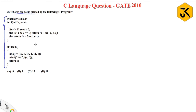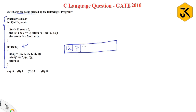Every program starts executing from the main method. Immediately, they have declared one array 'a' with elements 12, 7, 13, 4, 11, 6. The memory location of array 'a' starts at address 100, and the next elements are at 102, 104, 106, 108, 110. We increment by 2 digits because integer is an integer data type of size 2.